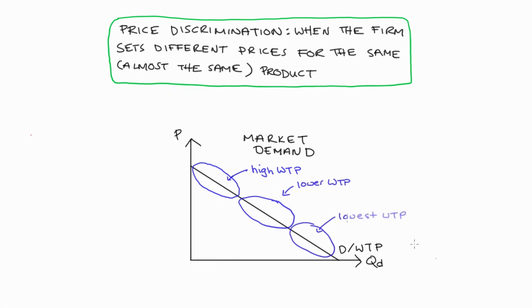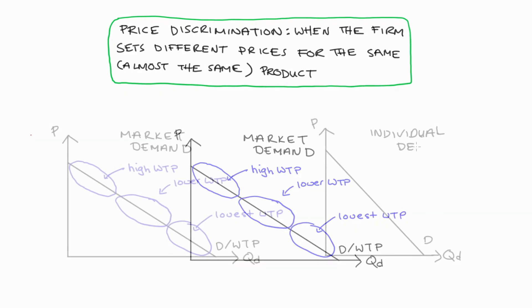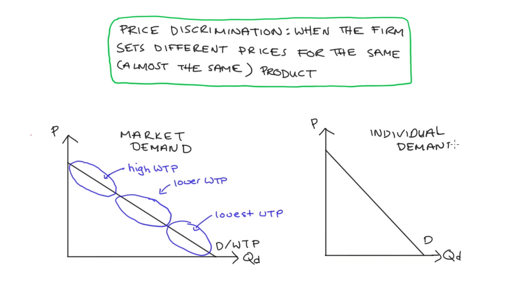And right down here, these guys here, relative to the others, they have a very low willingness to pay. Now, we also get this sort of shape in our demand when we're just talking about individual demand, in which case, the individual here has a high willingness to pay for the first or initial units consumed. And the willingness to pay for each successive unit diminishes because of diminishing marginal benefit. And so you end up with a downward sloping demand curve for these reasons.